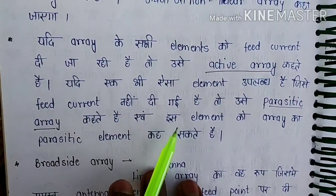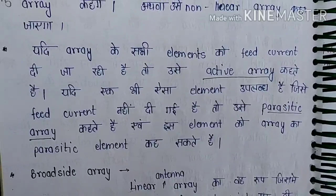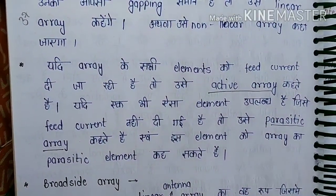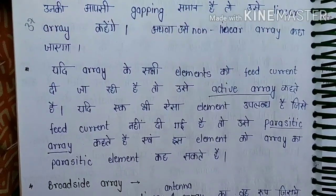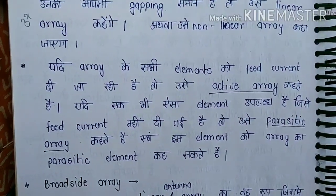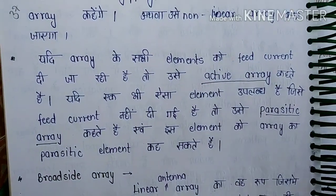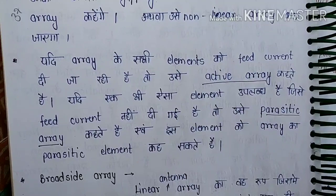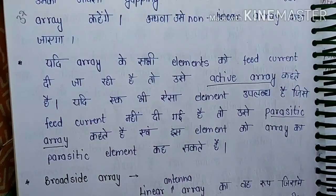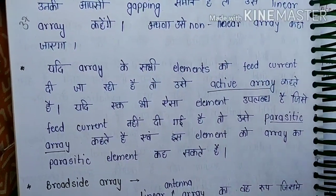To summarize the classification: if the gap between elements is linear, it will be a linear array; if the gap is not linear, it will be a non-linear array. If every element is fed current, it will be an active array. And if not every element is fed current, it will be a parasitic array, with those unfed elements called parasitic elements.